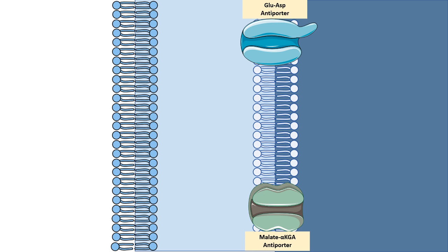The key transporters of the malate-aspartate shuttle are the malate-alpha-ketoglutarate antiporter and the glutamate-aspartate antiporter. As the names suggest, these are antiporters, meaning the transport direction is different for two solutes — one would be moving out and one would be moving in. In the cytosol, the glycolysis pathway would produce NADH.